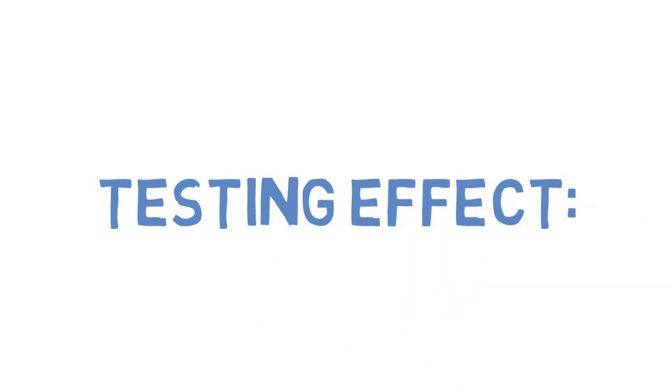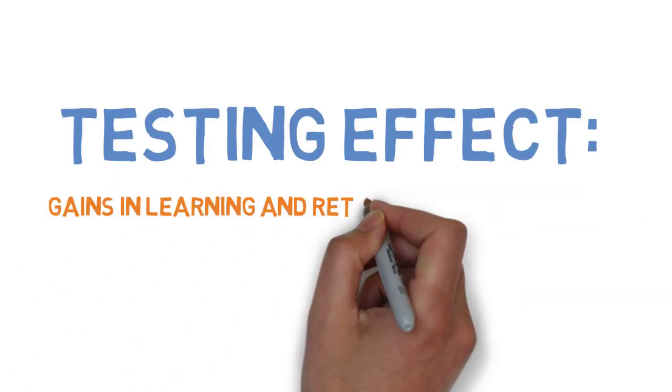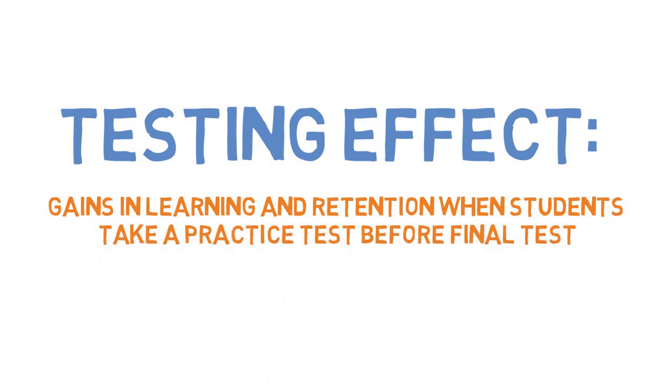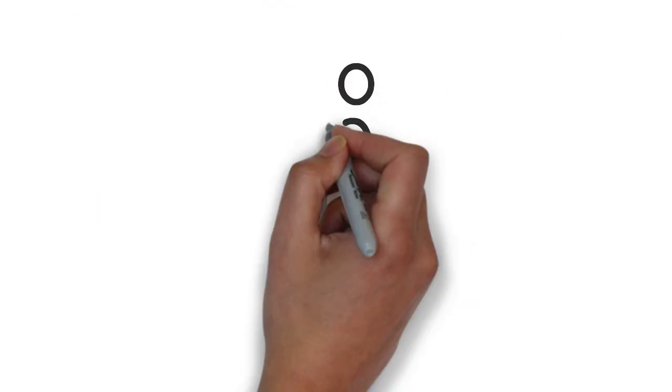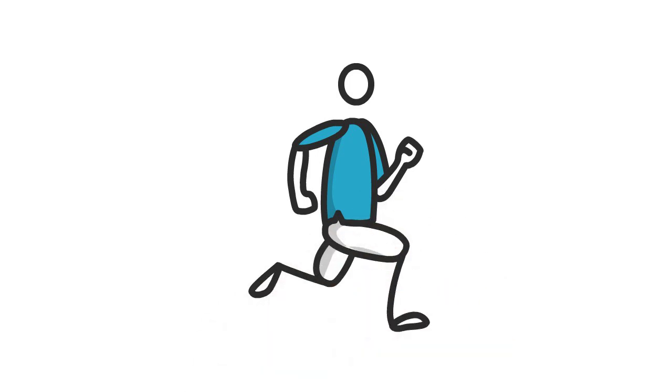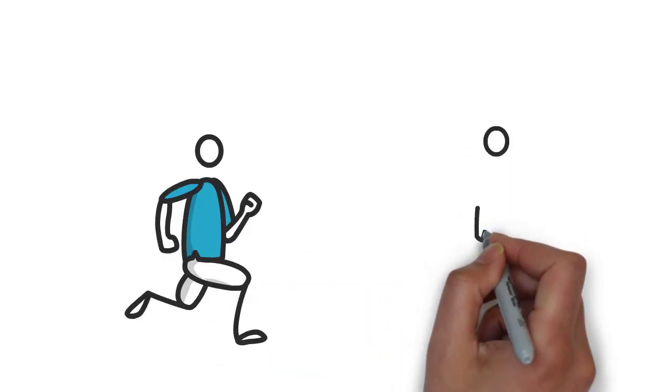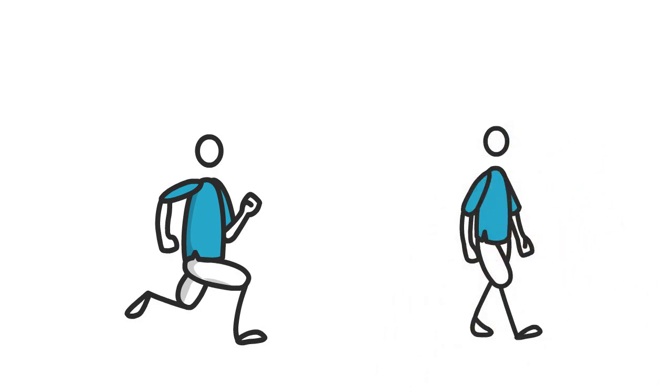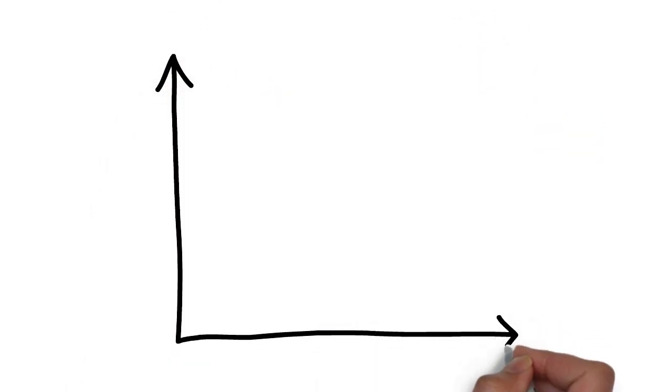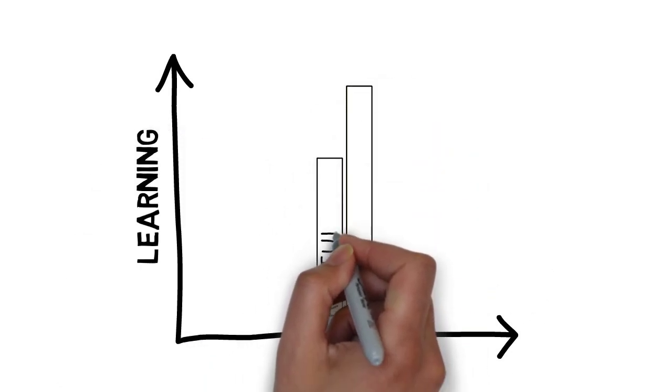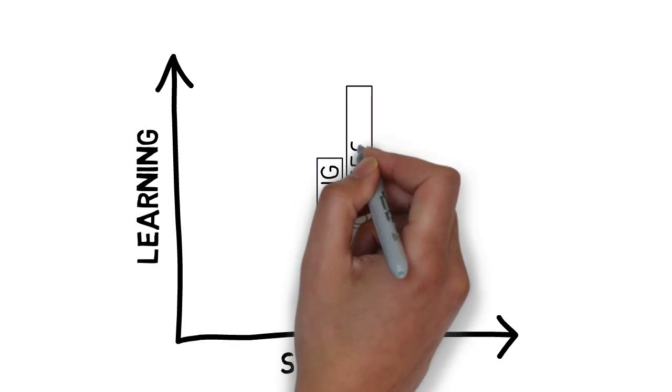The testing effect refers to gains in learning and retention that occur when students take a practice test on studied material before taking a final test on the same material. It has been studied over many decades. The reason why practice testing is so effective is that it involves having to actively recall information, while re-reading and highlighting are both passive processes. A meta-analysis from 2017 found that practice tests are significantly more beneficial for learning than just resetting the content.